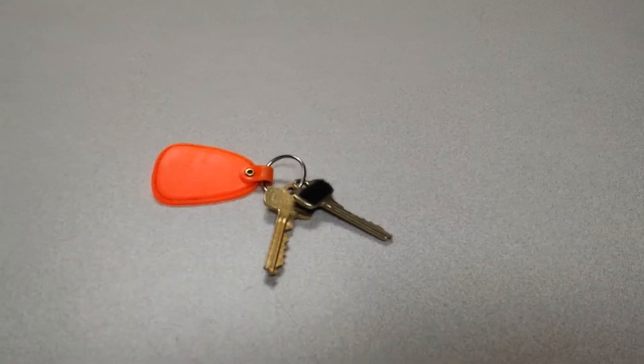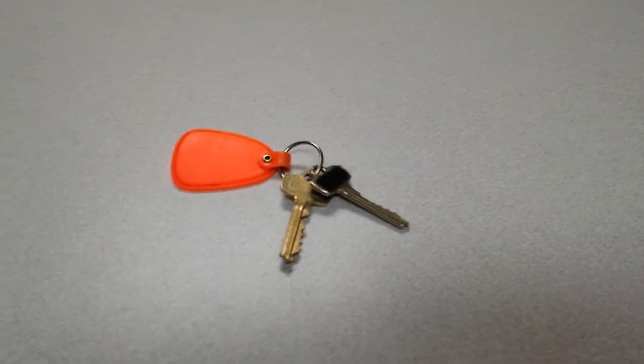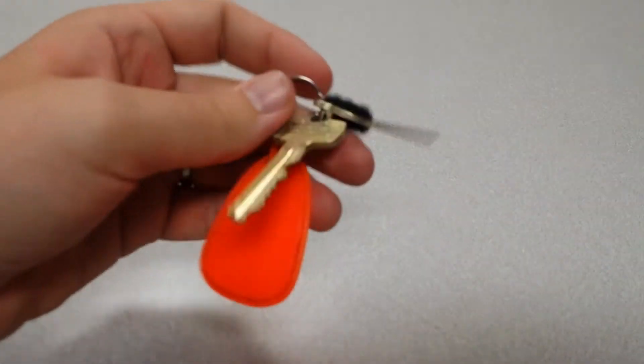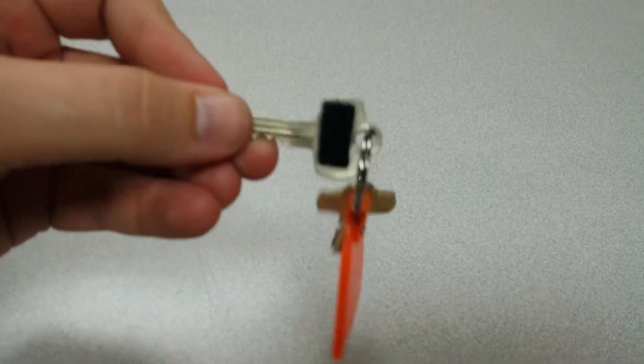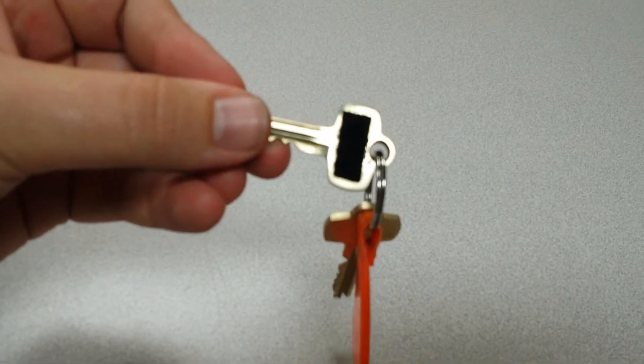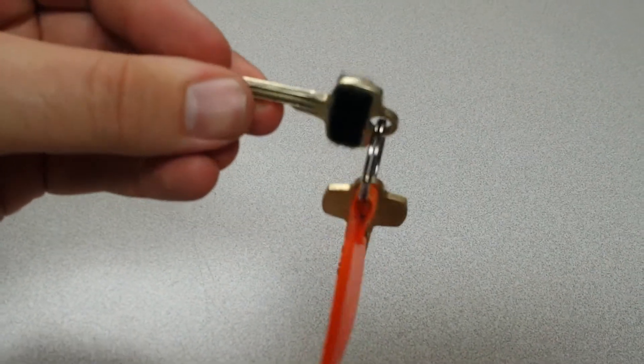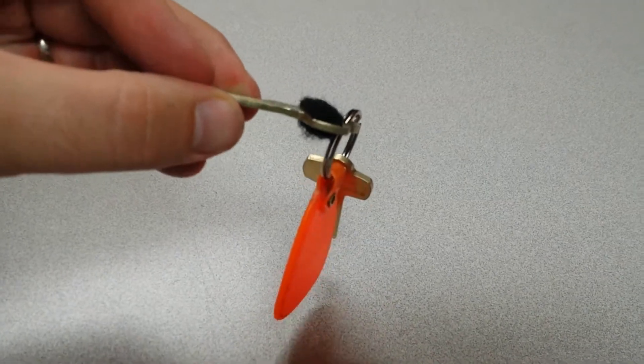Alright, and now this is finished. I got rid of the keys that I don't use anymore and I simply put the loop side of a piece of velcro on both sides of the key.